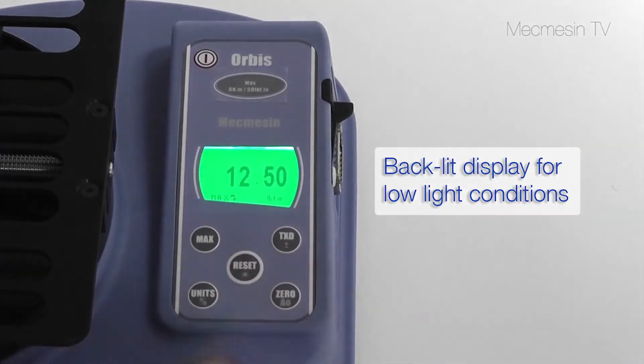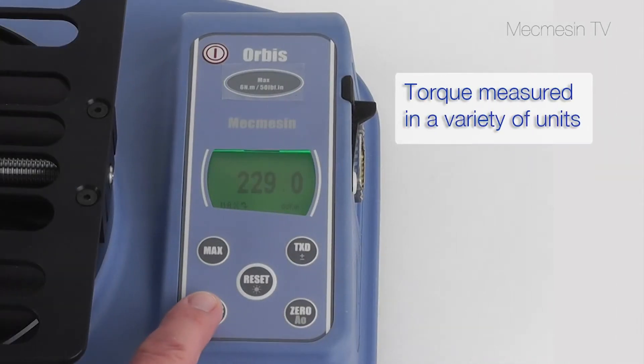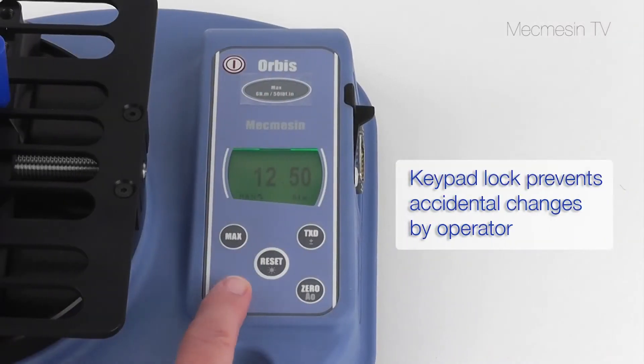The backlit display can be set to show torque measured in a variety of units, including Nm, lb-ft, oz-in, and others. You can prevent unauthorized changing of the displayed units and the max displays by locking out the keyboard.